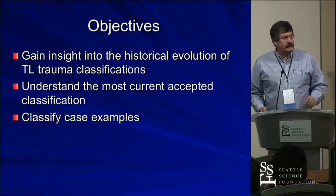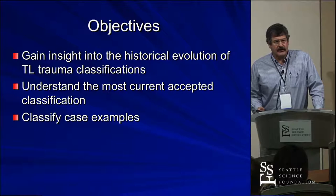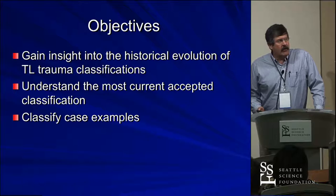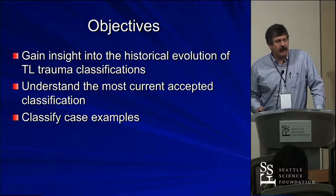So our objectives here: we're going to try to gain insight into the historical evolution of thoracolumbar classifications. I'm not going to dwell on that too much because I think it's more important to discuss where we are now. We want to understand the most current accepted classification, which I think is the new AO classification. And then we're going to classify some of these case examples.